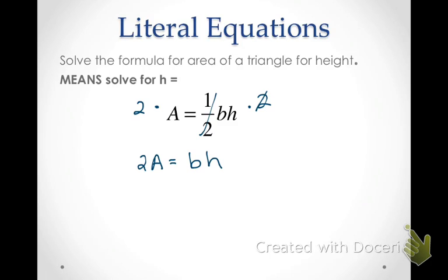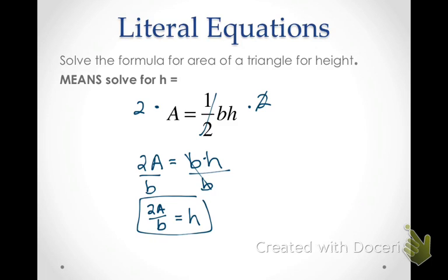These two are connected by multiplication, because any time we have a coefficient or two variables next to each other, that just means multiply. So to get h alone, I'm going to divide both sides by b. On the right side the b's cancel and I'm left with just h, which is what I wanted. On the left side I get 2a over b — so there's my final answer.